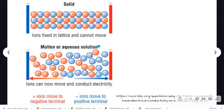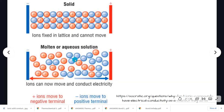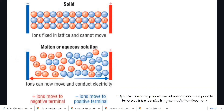However, once the ions dissolve — surrounded by water and away from the 3D lattice — or once they are liquid and some ionic bonds have broken so the ions are free to move, the ionic substance will conduct electricity. This is because there are now free-moving charges within the substance. When an electric field is applied, the negative ions move towards the positive end and the positive ions move towards the negative end. As the ions are free to move in the liquid or aqueous state, they can conduct electricity.